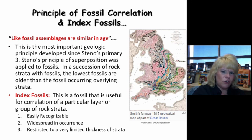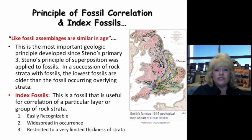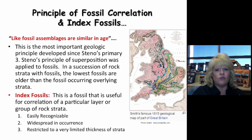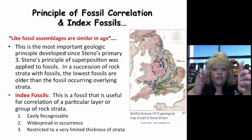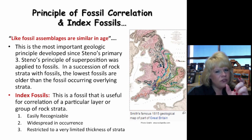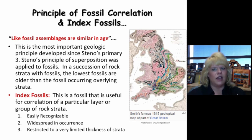This brings us to index fossils, which you've already learned about in physical. Index fossils are very useful in age-dating rocks in a relative manner, and you must meet all three requirements to qualify — this is test-relevant material. First, the fossil must be easily recognizable, meaning it is distinctly common for that time. Second, it must be widespread in occurrence over a large geographic area. Third, the fossil must be restricted to a narrow window of geologic time — its geologic range has a clear start and end — so that trilobite is an index fossil with a known basic range.